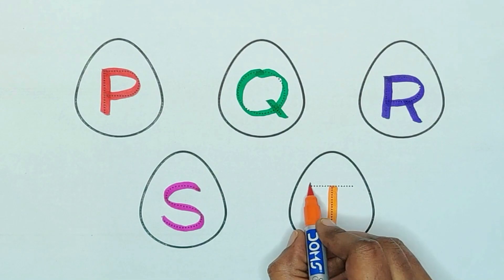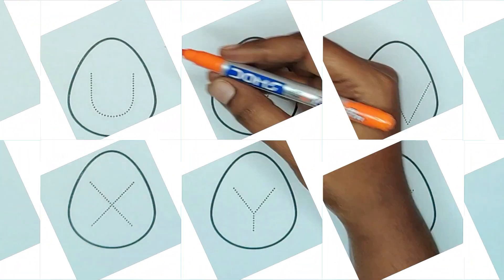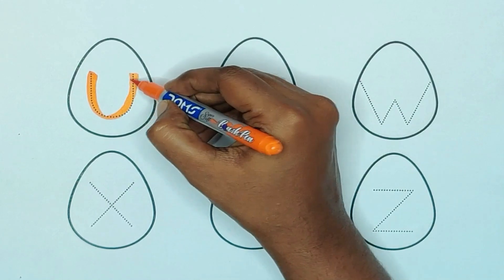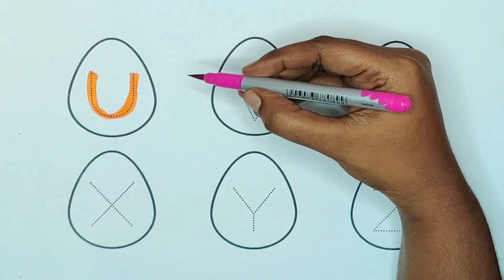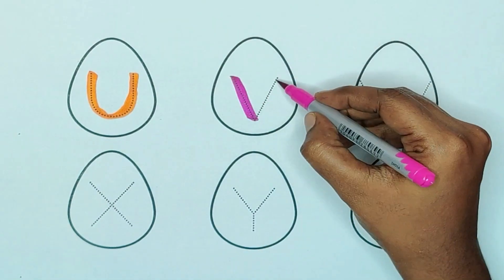Orange color T, T for truck. Orange color U, U for umbrella. Pink color V, V for van.